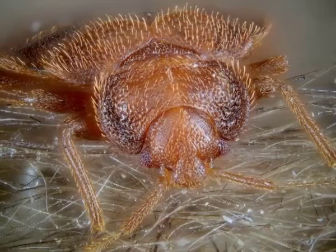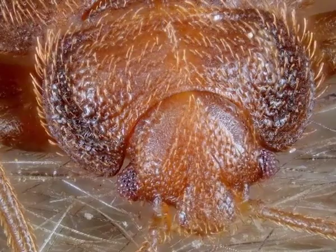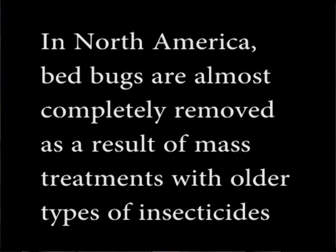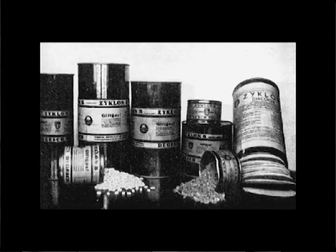Chemical control: Bed bug Cimex lectularius has emerged as a very important pest of the 21st century, occurring in urban areas as well. As of 2012, there were no effective pesticides available to kill and control bed bugs. In the past, DDT, Chlordane and Lindane were used to eradicate bed bugs. In North America, bed bugs were almost completely removed as a result of mass treatments with older insecticides such as DDT, Chlordane and Lindane. During World War II, the bed bug problem was solved by fumigation using Zyklon discoids that released hydrogen cyanide gas, and later DDT was used. Bed bug bombs or foggers are popular but are not effective when treating bed bugs.